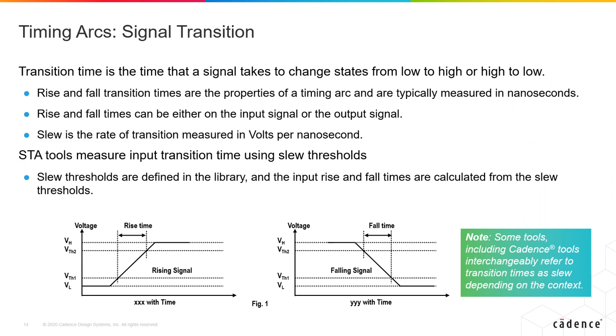All semiconductor devices take some time to switch between states. Transition time is the time that a signal takes to change states from low to high or high to low. The picture shows signal rising from low to high and signal falling from high to low. These rise and fall transition times are the properties of a timing arc.